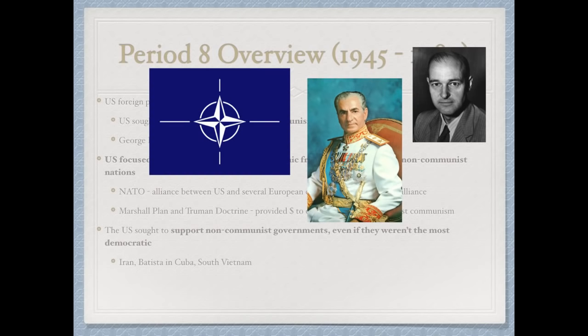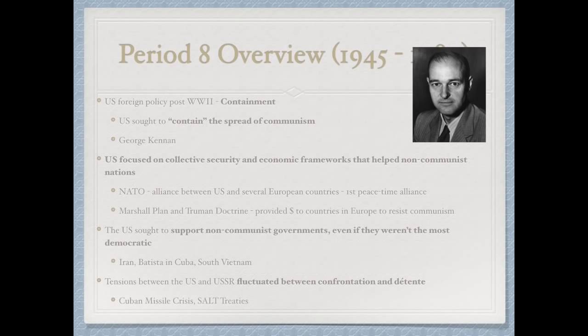Tensions between the US and Soviet Union fluctuated between confrontation and détente — easing of tensions. The Cuban Missile Crisis was the closest the two sides ever came to nuclear war. We later see easing through the SALT treaties — the Strategic Arms Limitation Treaties.